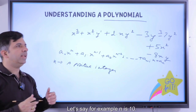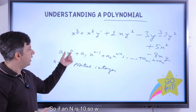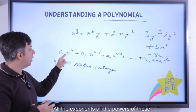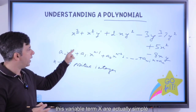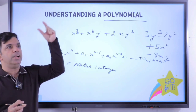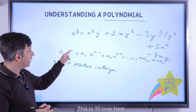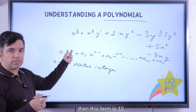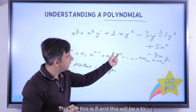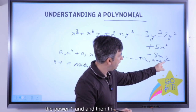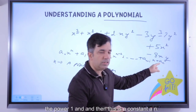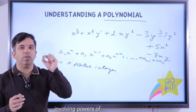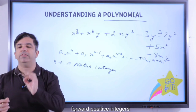For example, if n is 10, we can see that all the exponents — all the powers of the variable x — are simple positive integers: 10, 9, 8, ..., down to x¹, and then a constant aₙ. All terms involve powers of x which are straightforward positive integers.